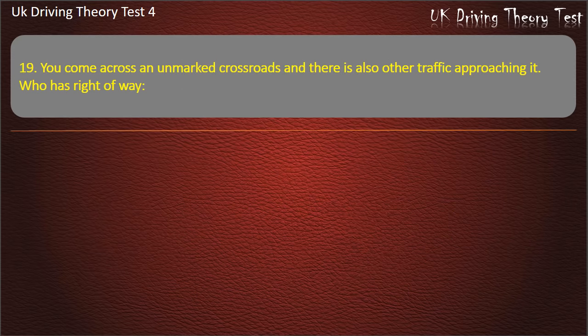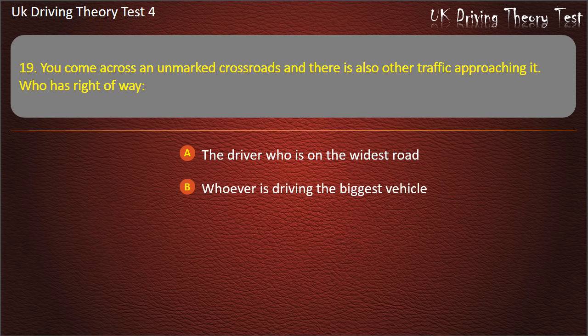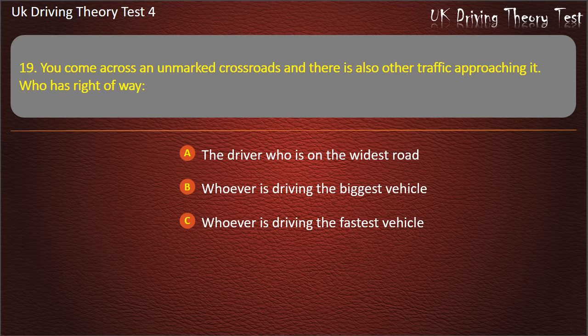Question 19. You come across an unmarked crossroads and there is other traffic approaching. Who has right of way? The driver on the widest road; whoever is driving the biggest vehicle; whoever is driving the fastest vehicle; or no one. Answer: No one.